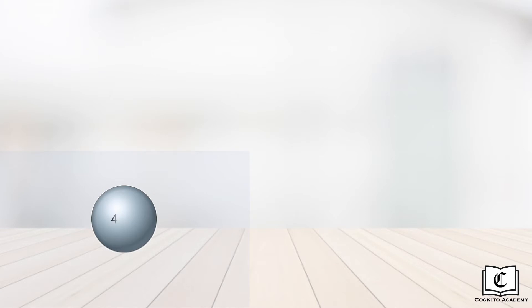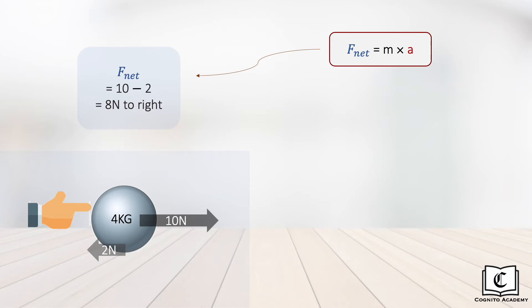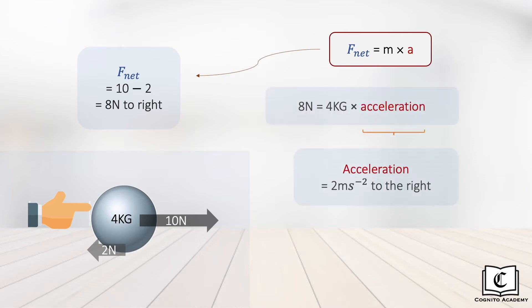Let's try an example. We have a 4 kg steel ball at rest on a tabletop. The ball is being pushed towards the right with a force of 10 newtons, and there is a frictional force of 2 newtons acting against it. Find the acceleration of the ball. By Newton's second law, mass multiplied by acceleration equals net force. The net force acting on the ball is 8 newtons to the right, so the acceleration is 2 meters per second squared towards the right.